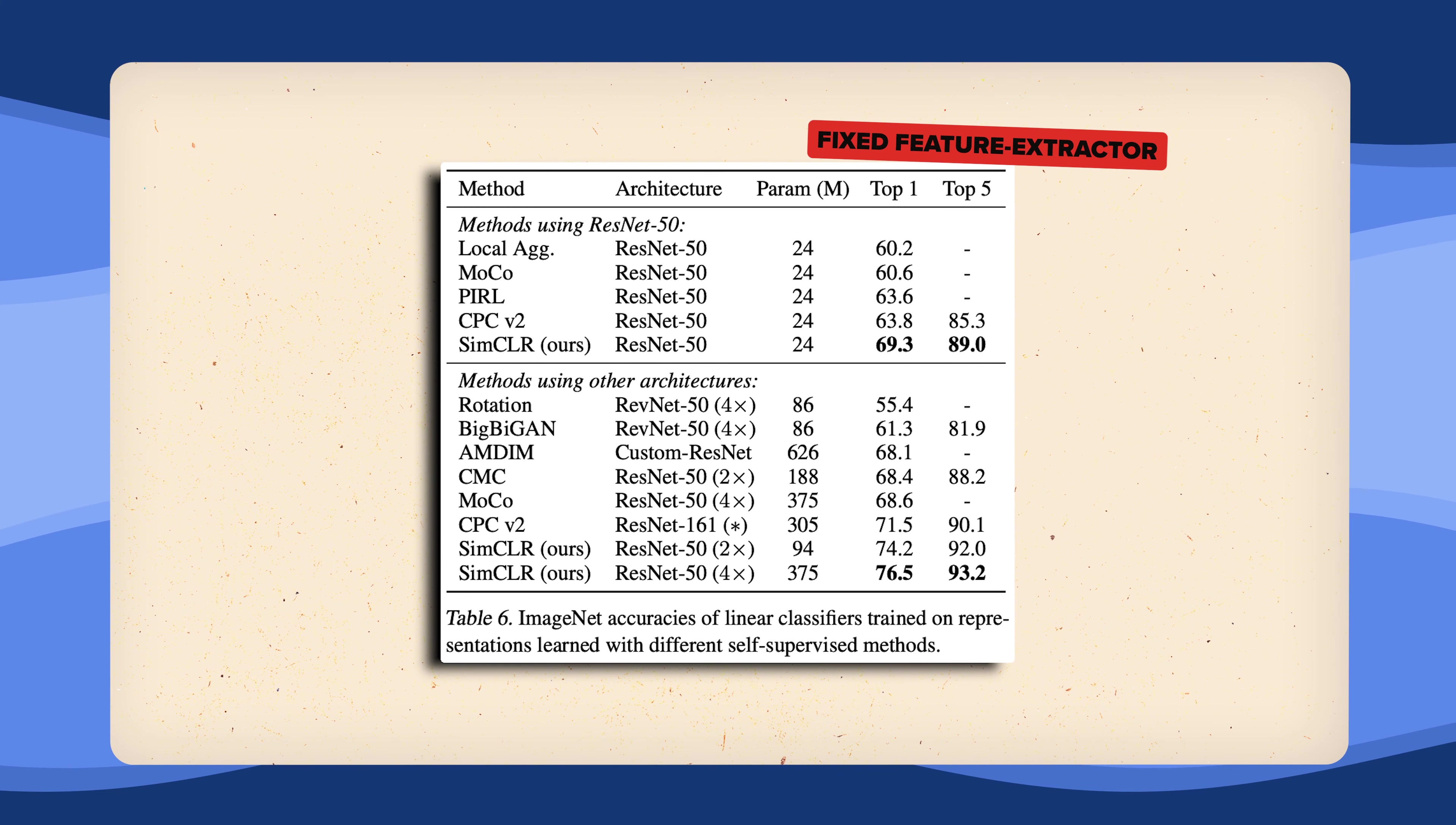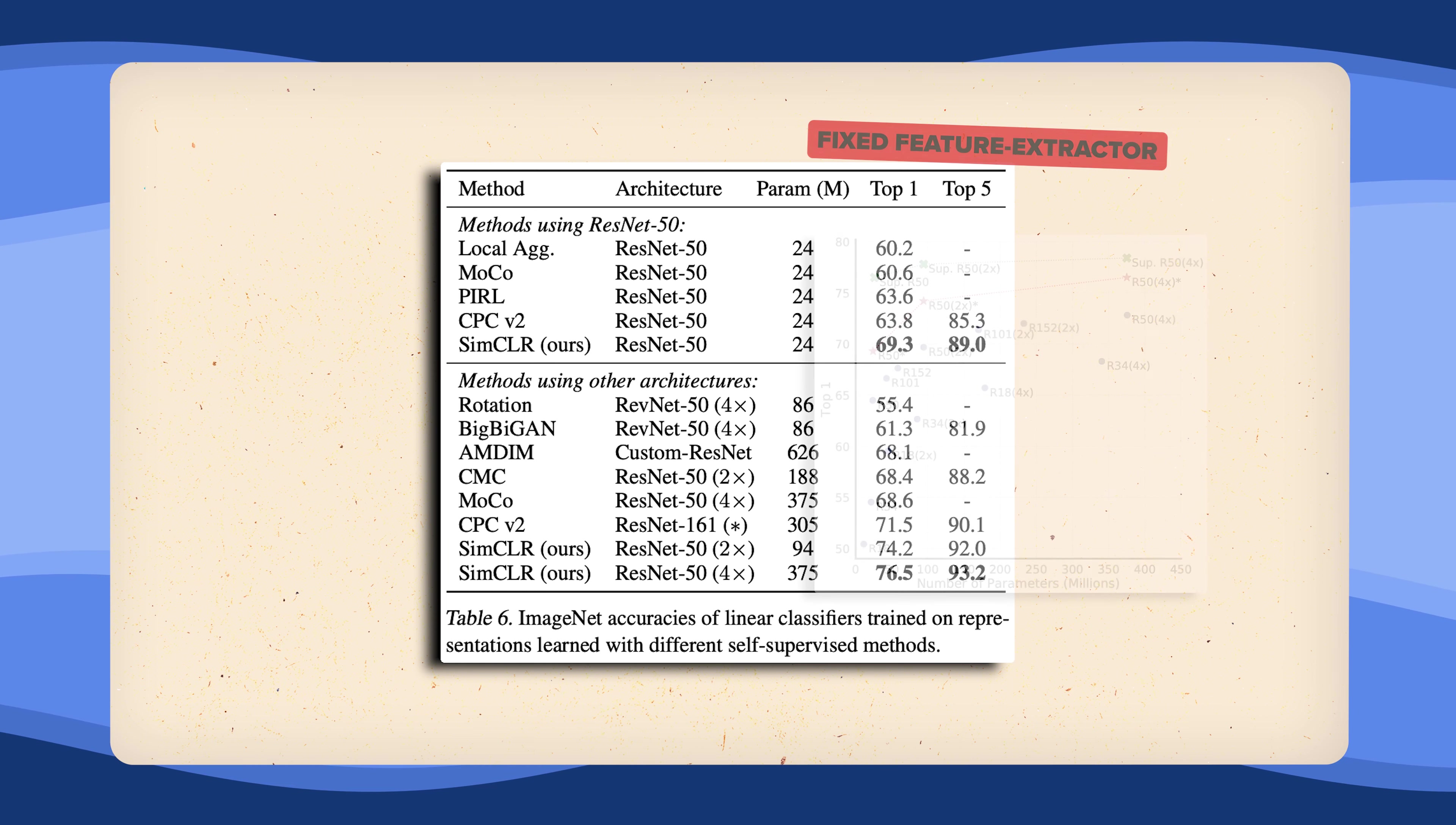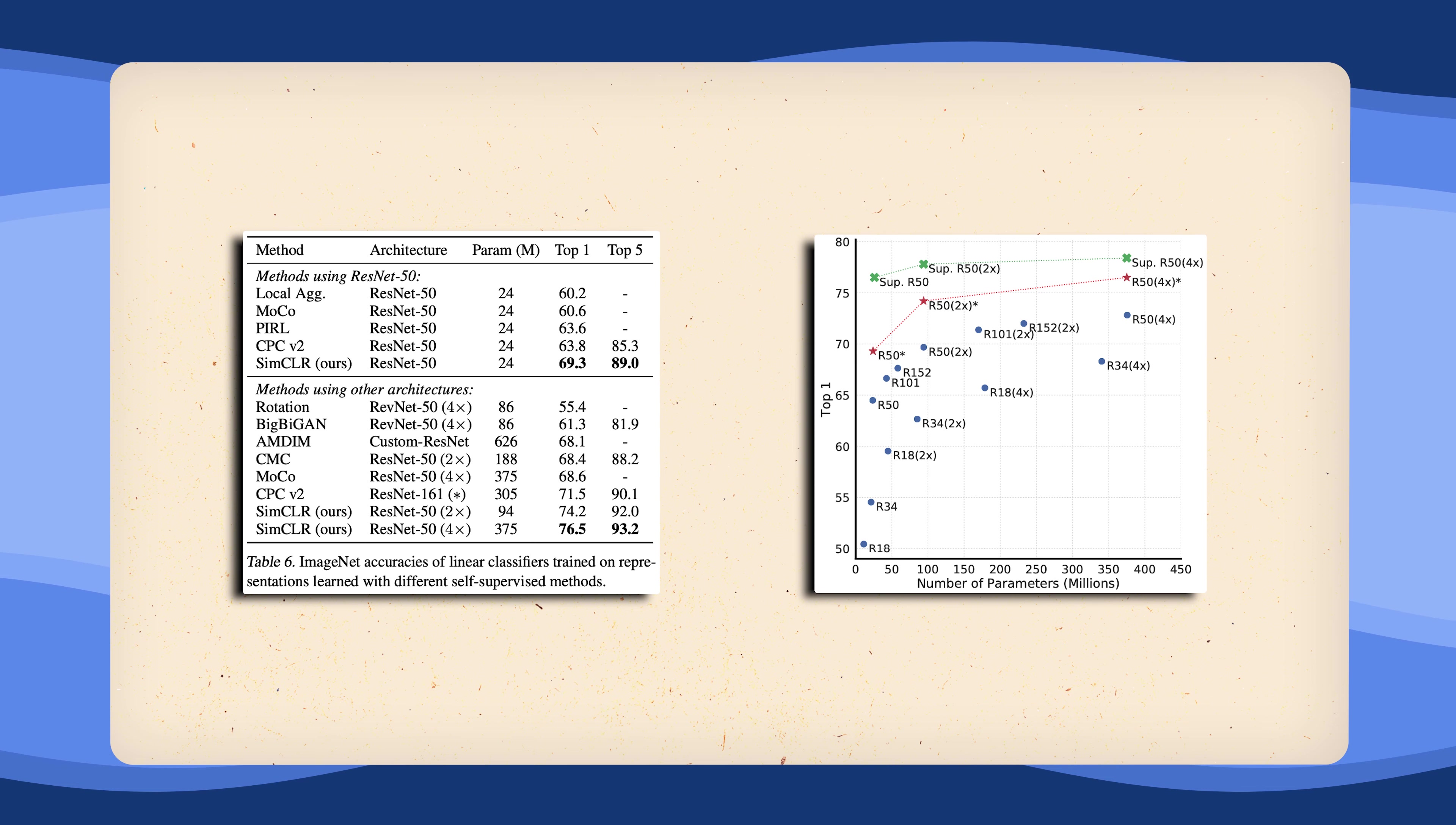This also holds when comparing on linear evaluation benchmarks, meaning having fixed feature extractor weights and only fine-tuning the linear prediction head. Even when comparing between different architectures of different sizes, the 94 million parameter SimCLR model outperforms larger models. But it still does not reach the performance of a fully supervised trained model.